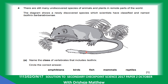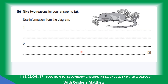Question 4. There are still many undiscovered species of animals and plants in remote parts of the world. The diagram shows a newly discovered species which scientists have classified and named. Name the class of vertebrates that includes esotris. It has features of a mammal. Give two reasons: it has hairs or fur covering the body, and it has external ears.